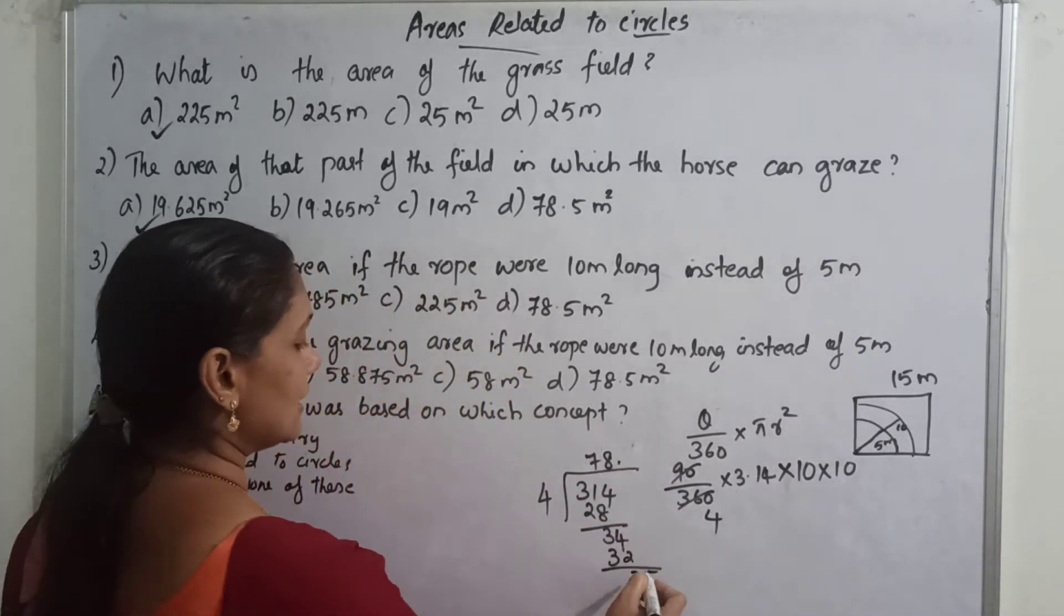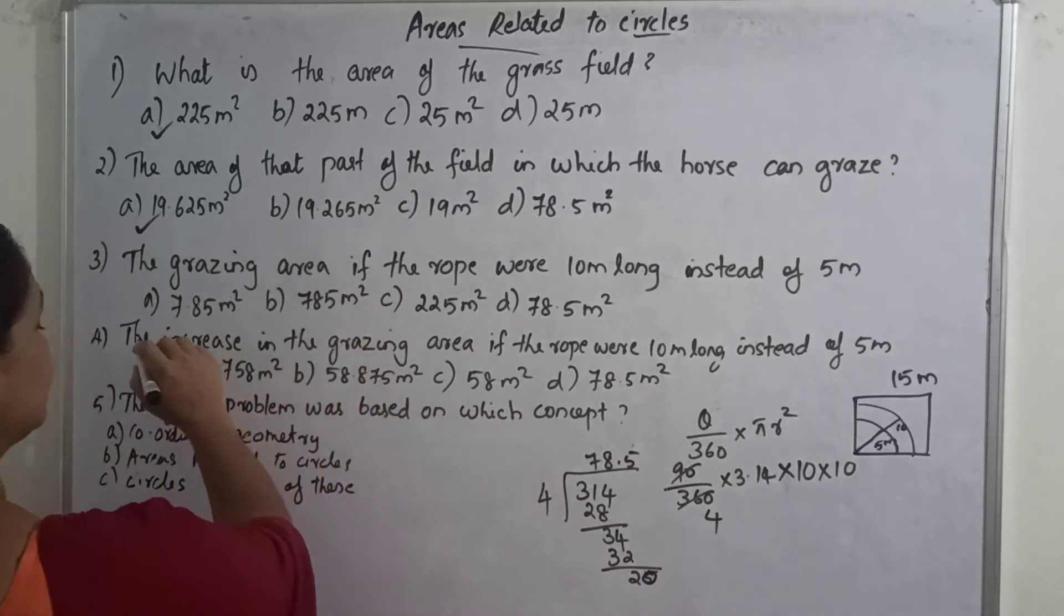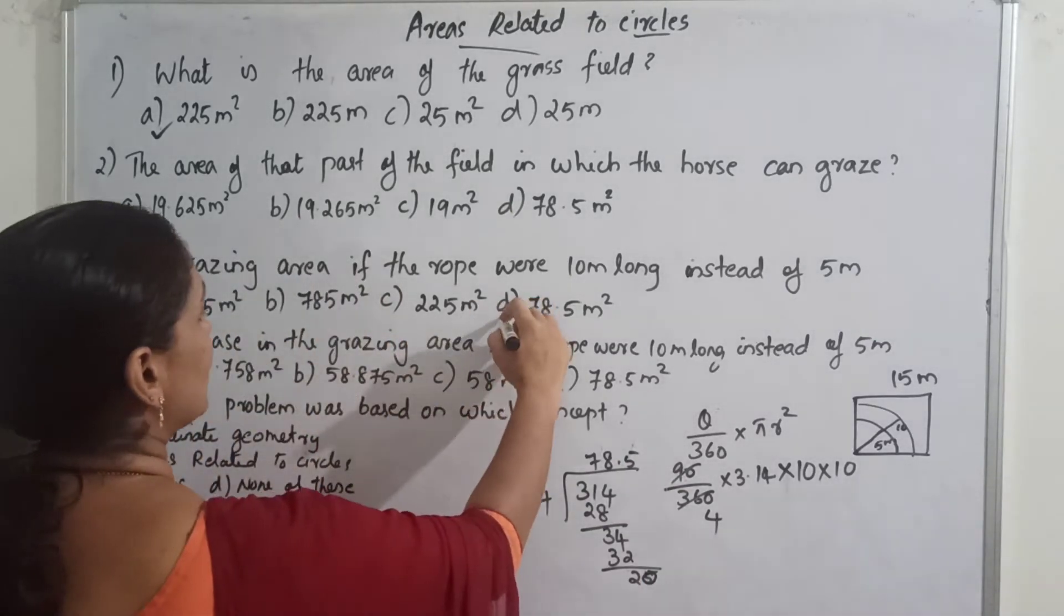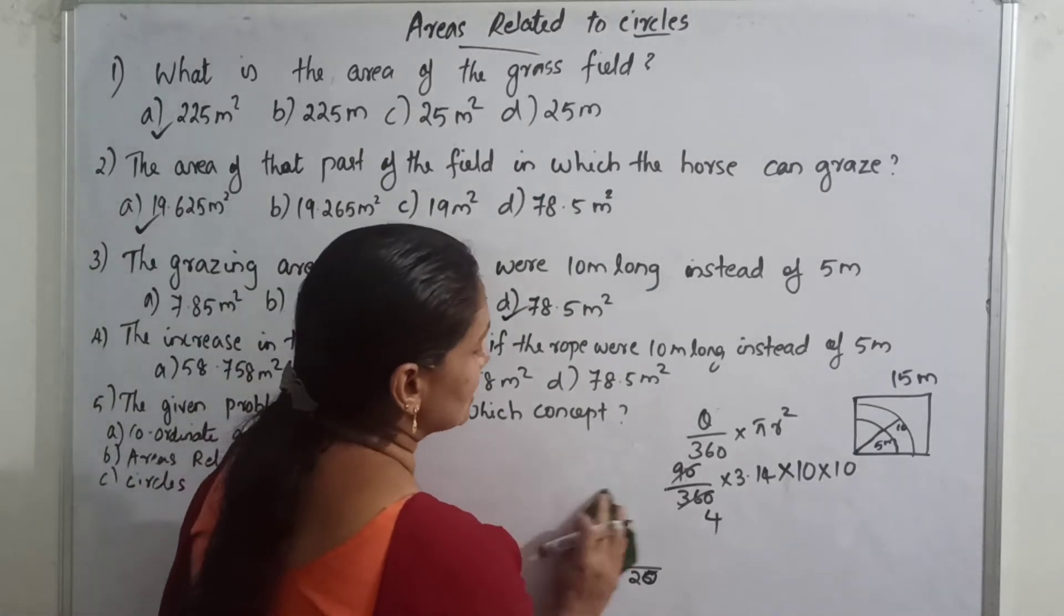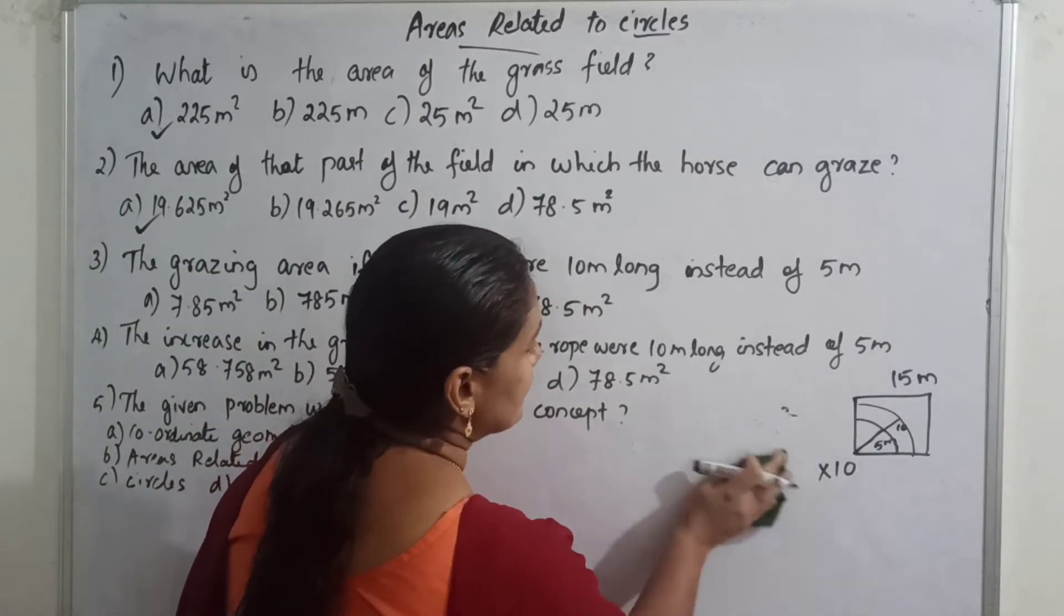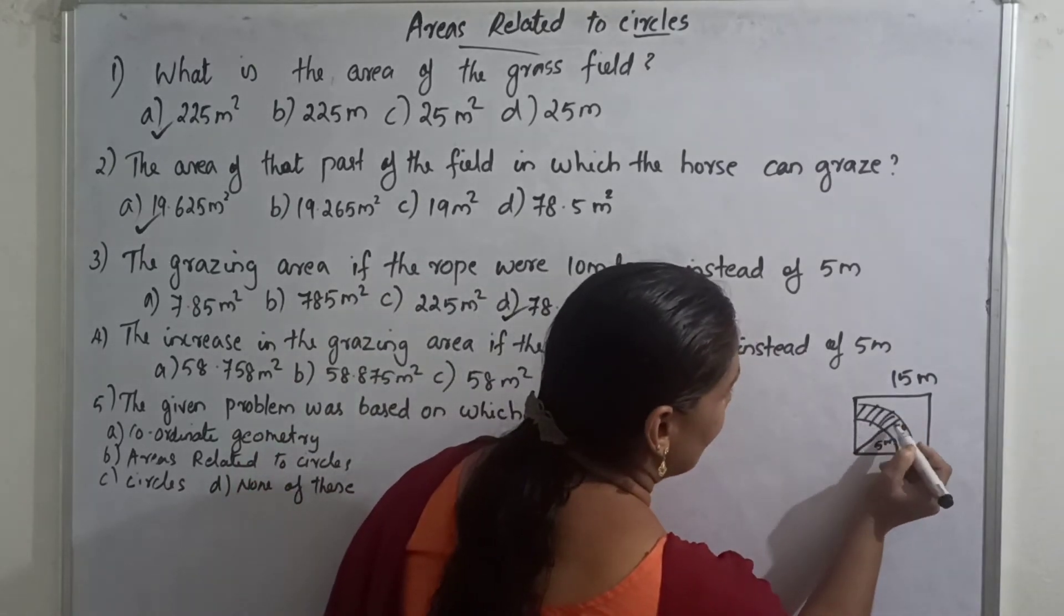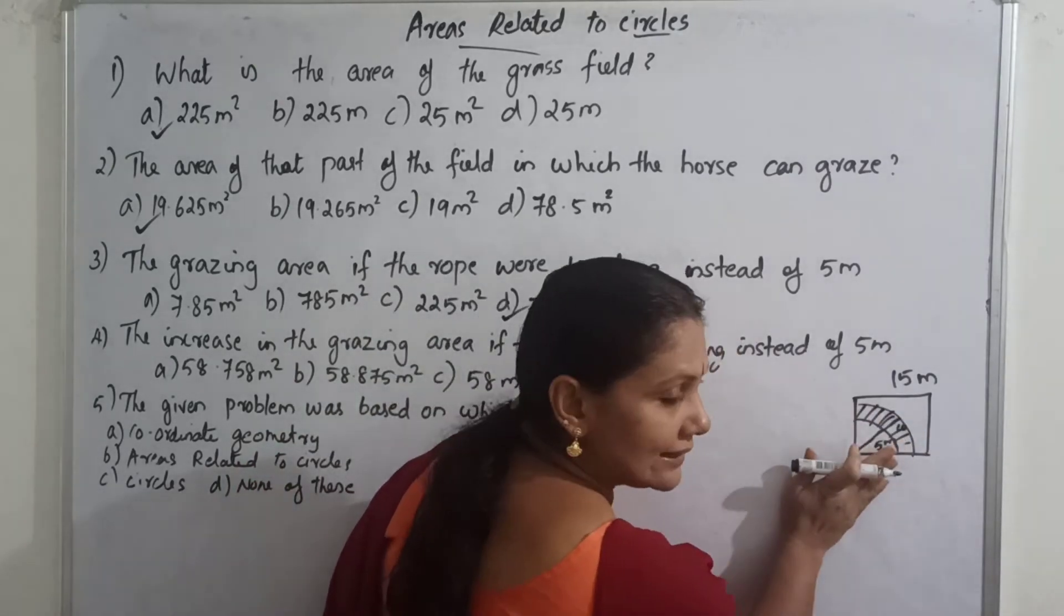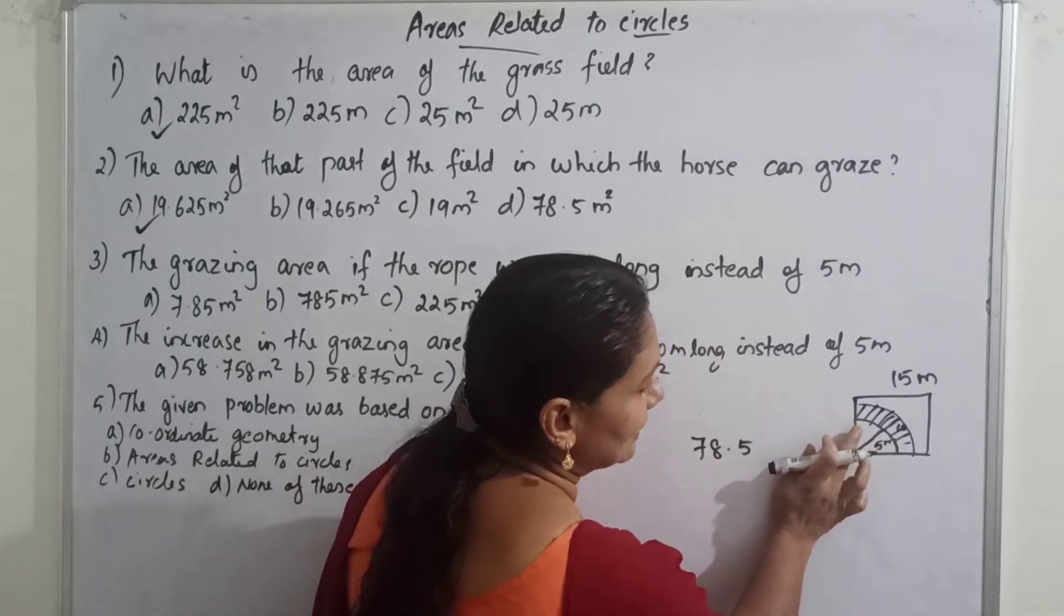78.5 m². Now that is 78.5 meters square. Now that's the question that comes from the increasing area, that's the area we have. Here we go, 78.5 meters square, now that is the 5 meters long area.